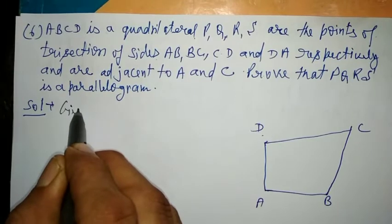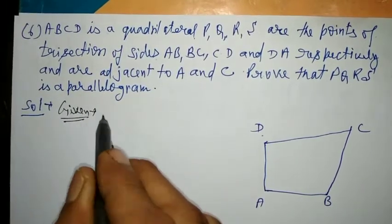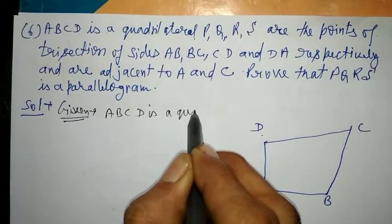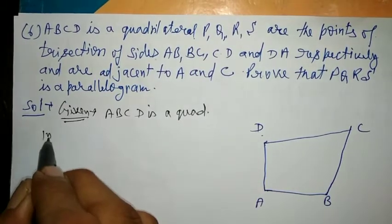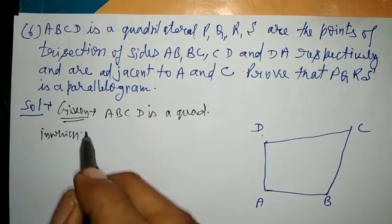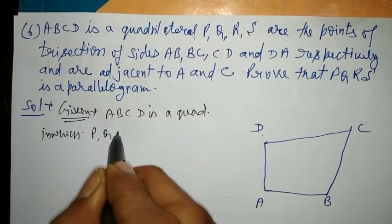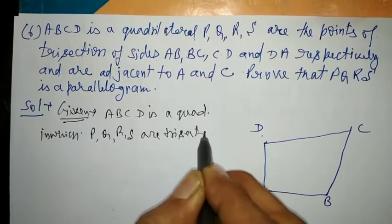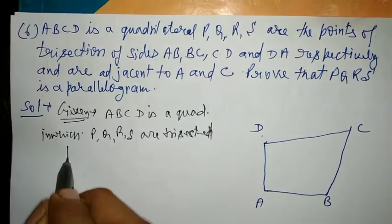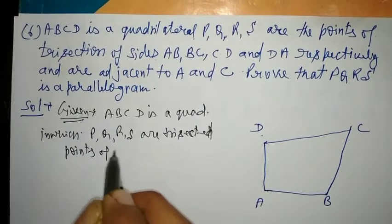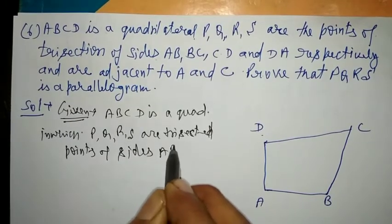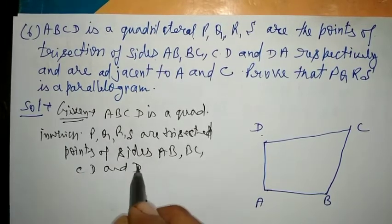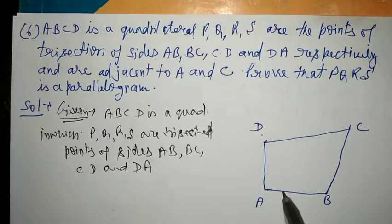Given: ABCD is a quadrilateral in which P, Q, R, S are trisected points of sides AB, BC, CD, and DA respectively.